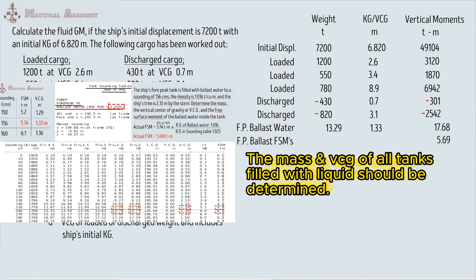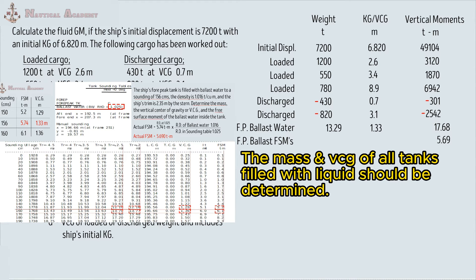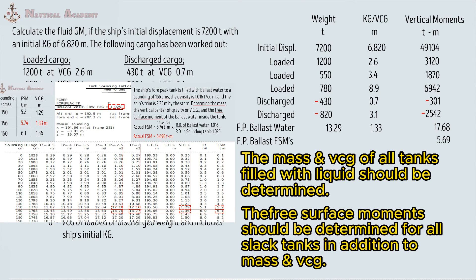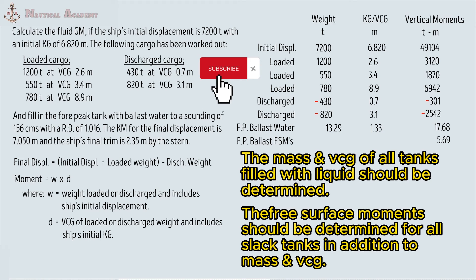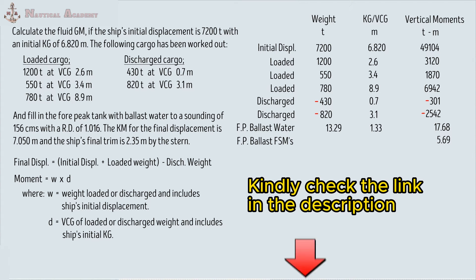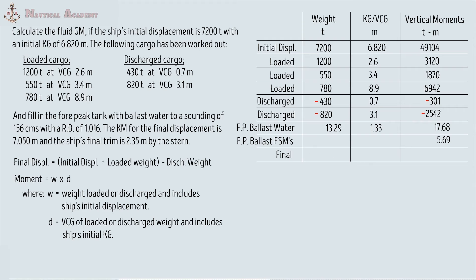Always remember that the mass and VCG of all tanks filled with liquid should be determined. The free surface moment should be determined for all slack tanks to find the final KG. Next, we will determine the final displacement by adding all the loaded weight to the initial displacement — including the weight of the ballast water in the 4-peak tank — then subtracting the discharged weight. The final displacement is 8,493.29 tons.